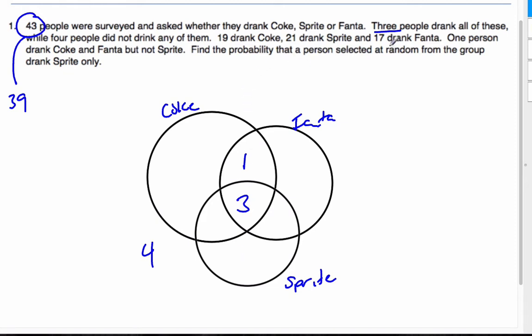Find the probability that a person selected at random from the group drank only Sprite. Well, I'm looking for only Sprite. Oh, I forgot Sprite. Only Sprite, which is going to be some number of this scenario here that we're going to look for, and I'll call that S. It's going to be S over the total of 43 is the probability. So I need to find S.